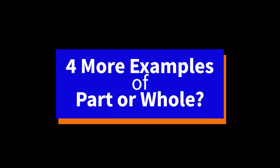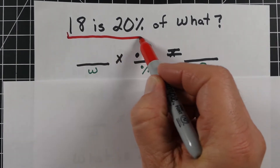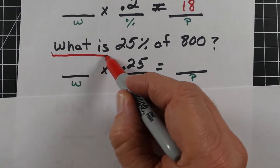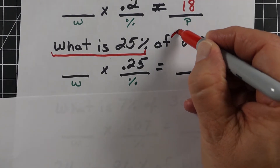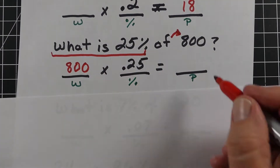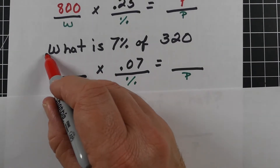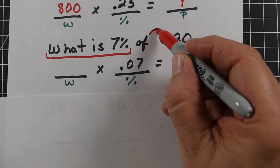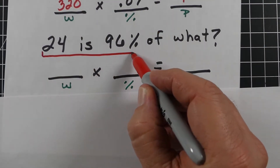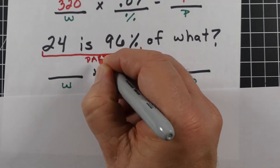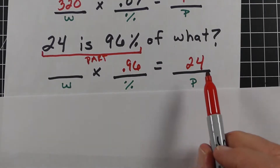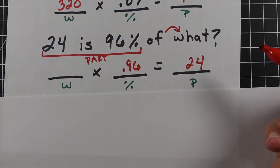Here are four examples of determining part versus whole. First: '18 is 20%' — the 18 is the part. Second: 'What is 25% of 800?' — we don't know the part, but 800 is the whole, and we use variable P. Third: 'What is 7% of 320?' — the part is unknown and 320 is the whole. Fourth: '24 is 96%' — 24 is the part, 96% is known, and we use variable W for the unknown whole.